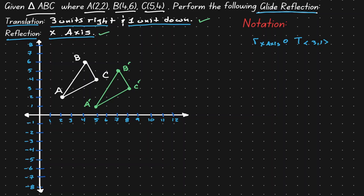Now let's perform the reflection on the green triangle — not on the original, but on the triangle we got after the translation. Starting with point A': when it gets reflected over the x-axis, we end up at (5, -1). Since this is the location after two transformations, we use double prime notation and call it A''. Reflecting B' gives us the new location (7, -5), which we call B''. Reflecting C' gives us (8, -3), which we call C''.